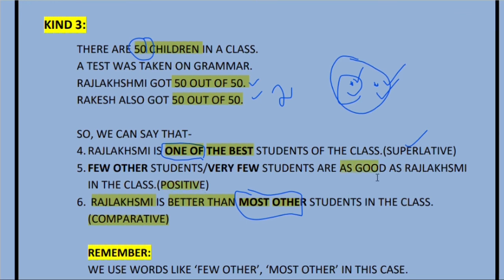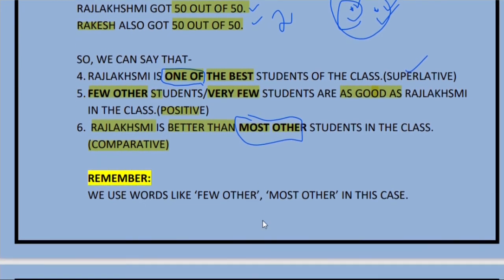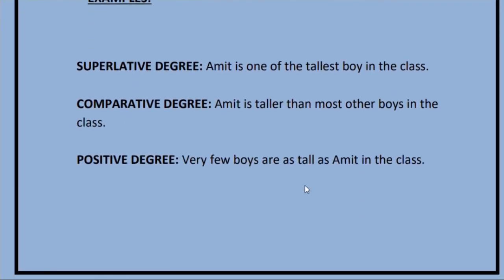For the positive degree in kind three, we use 'as good as.' Only one child — Rakesh — is as good as Raj Laxmi, so we write: 'Very few students are as good as Raj Laxmi in the class.' In kind three we use 'few other' or 'most other,' whereas in kind two we used 'all other' and 'no other.'